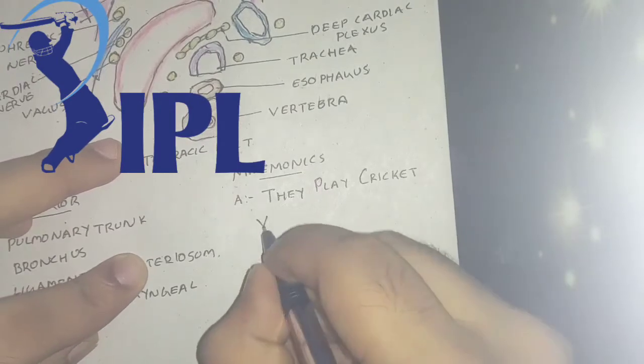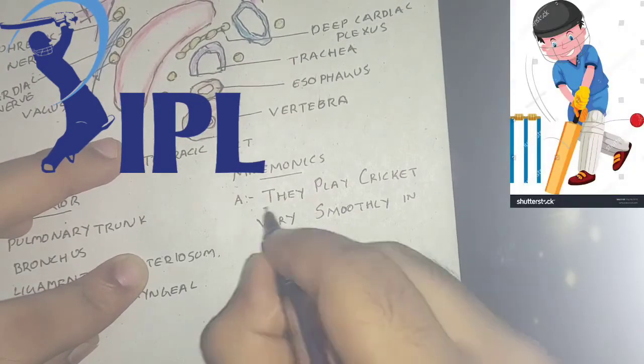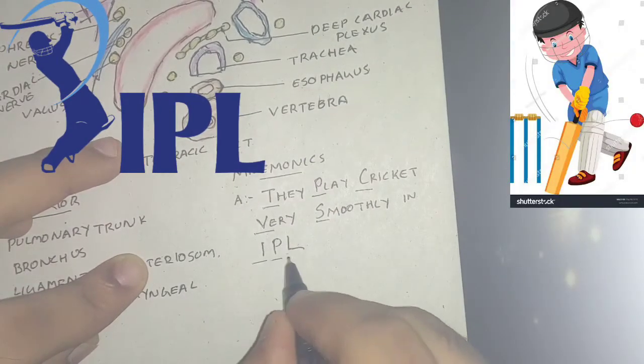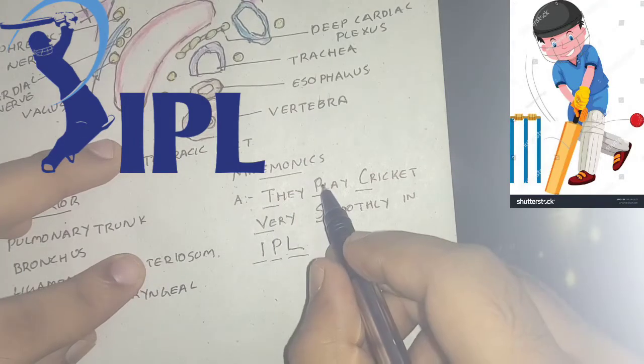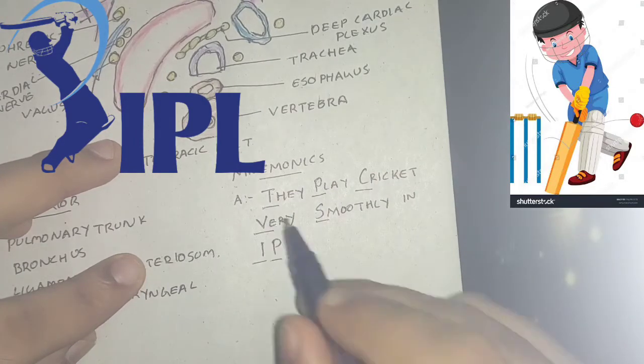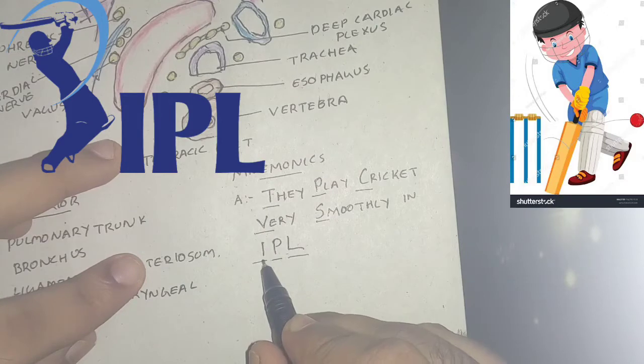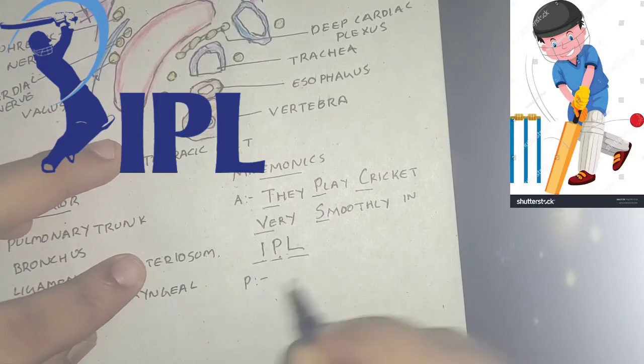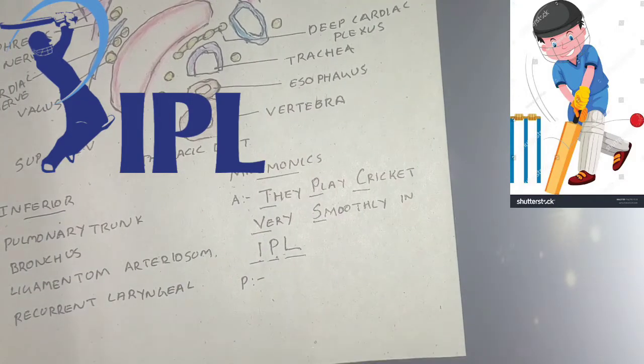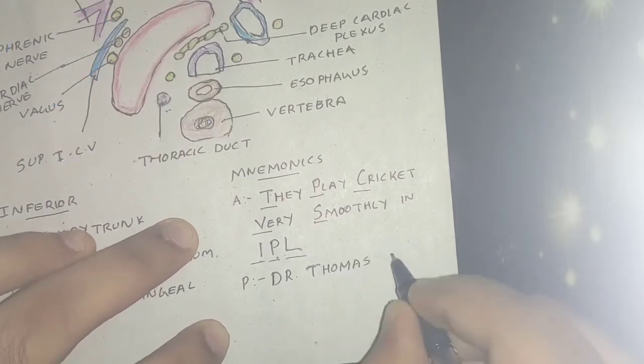For the anterior relations, they play cricket very smoothly in IPL. So T for the remains of thymus, P for phrenic nerve, C for the cervical cardiac branch of left vagus, V for vagus, S for sympathetic chain, I for the left superior intercostal vein, P for pleura, and L for lungs.